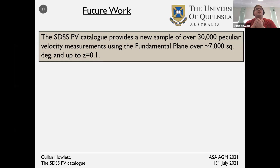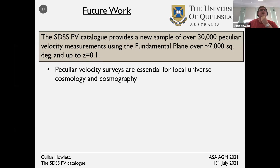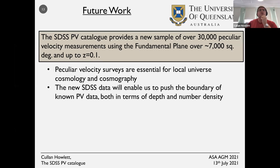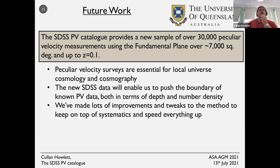To conclude: we have this new catalogue of peculiar velocities providing a sample of about 30,000 peculiar velocity measurements. These are essential for local universe cosmology and cosmography. This new data has enabled us to achieve improvements both in terms of depth and number density.